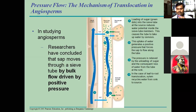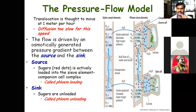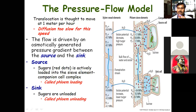This is called continuous flow or mass flow. 'Mass' means bulk — the flow is in bulk. The pressure gradient (psi) is maintained by means of continuous flow of food material through the phloem, and the water level is maintained by the xylem. Food produced by the leaves is transported to the companion cell and then to the sieve tube element, increasing the concentration gradient, and water comes from xylem to maintain this pressure.